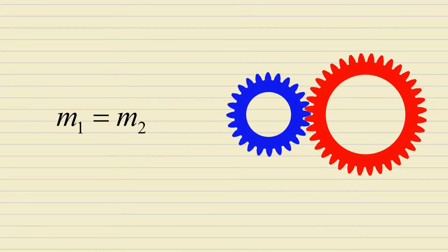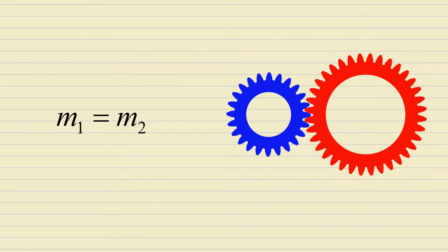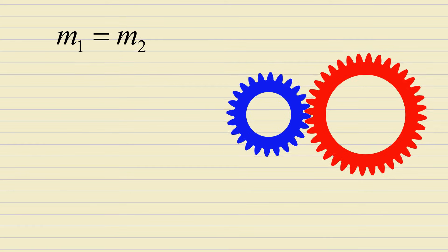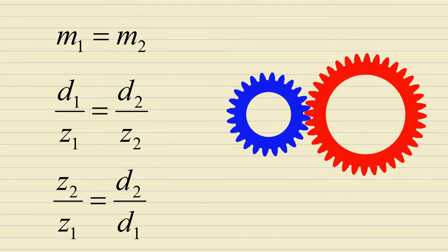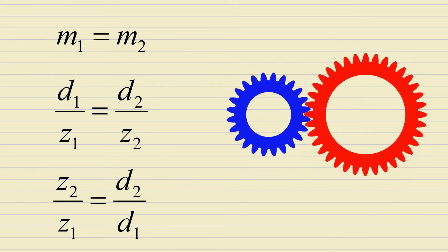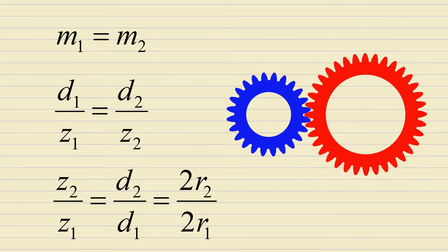For two gears to mesh, they must have the same module. Since the module is the gear's diameter divided by its number of teeth, the following is true. Therefore, the ratio of the number of teeth equals the ratio of the diameters. And since the diameter is two times radius, it also equals the ratio of the radii.